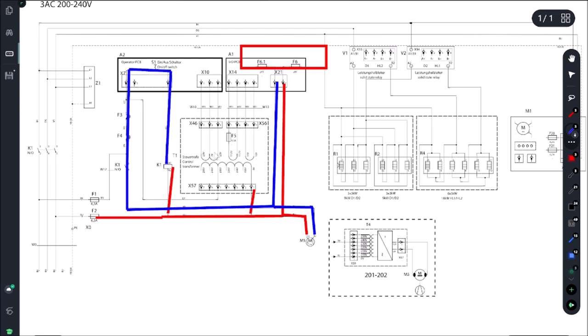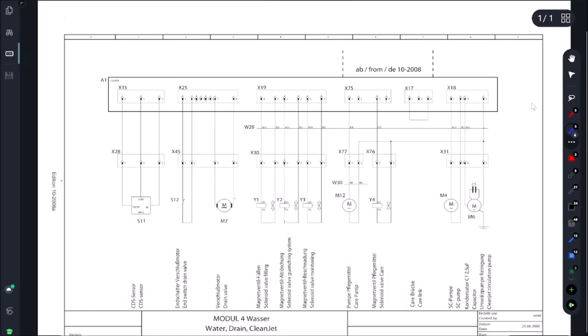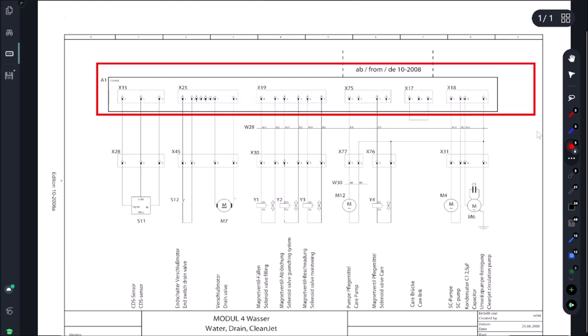What gets even more confusing is these fuses also run everything on this A1. So that means our dead short could be on our emptying pump M6, clean jet pump, solenoid valve.